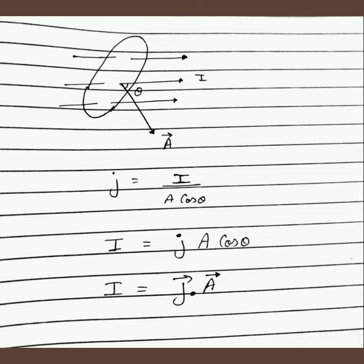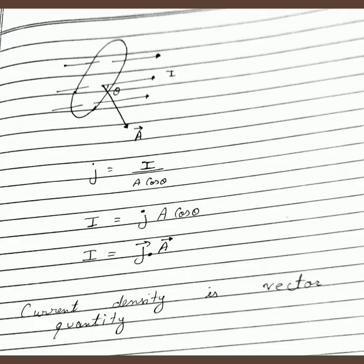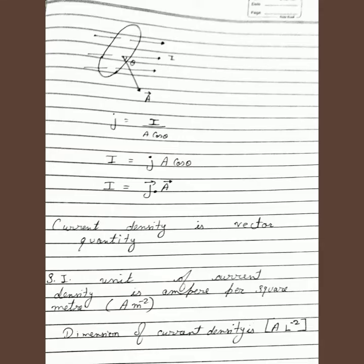Mathematically, this expression also proves that current is a scalar quantity. But remember: current density is a vector quantity. Current density is in the direction of positive charge flow. Current is scalar, but current density J is a vector quantity.